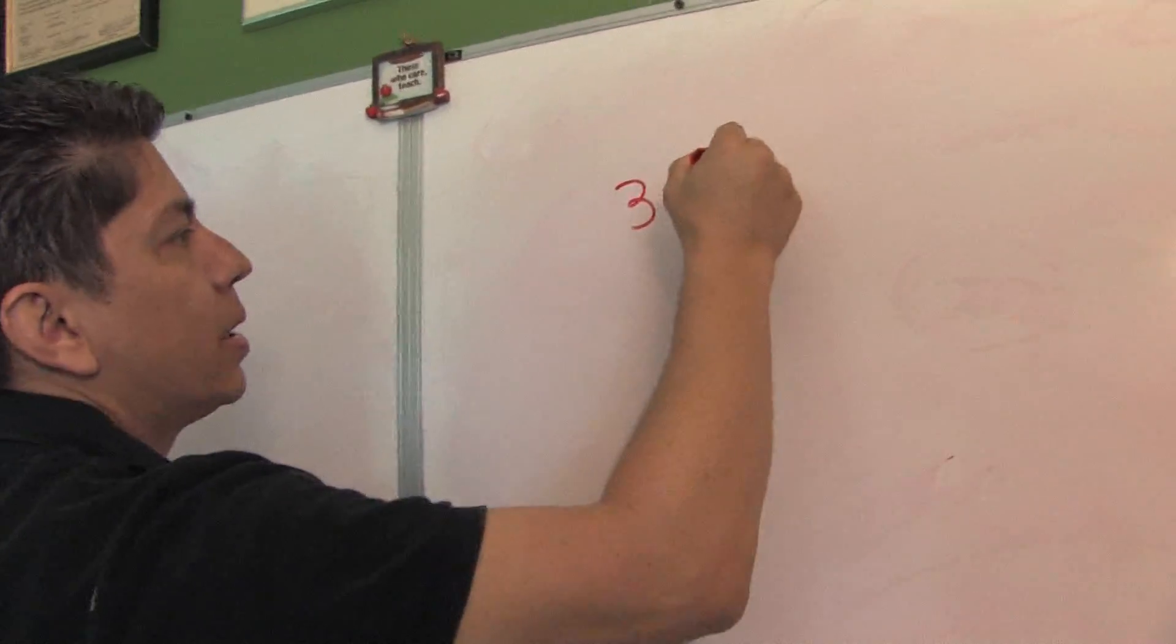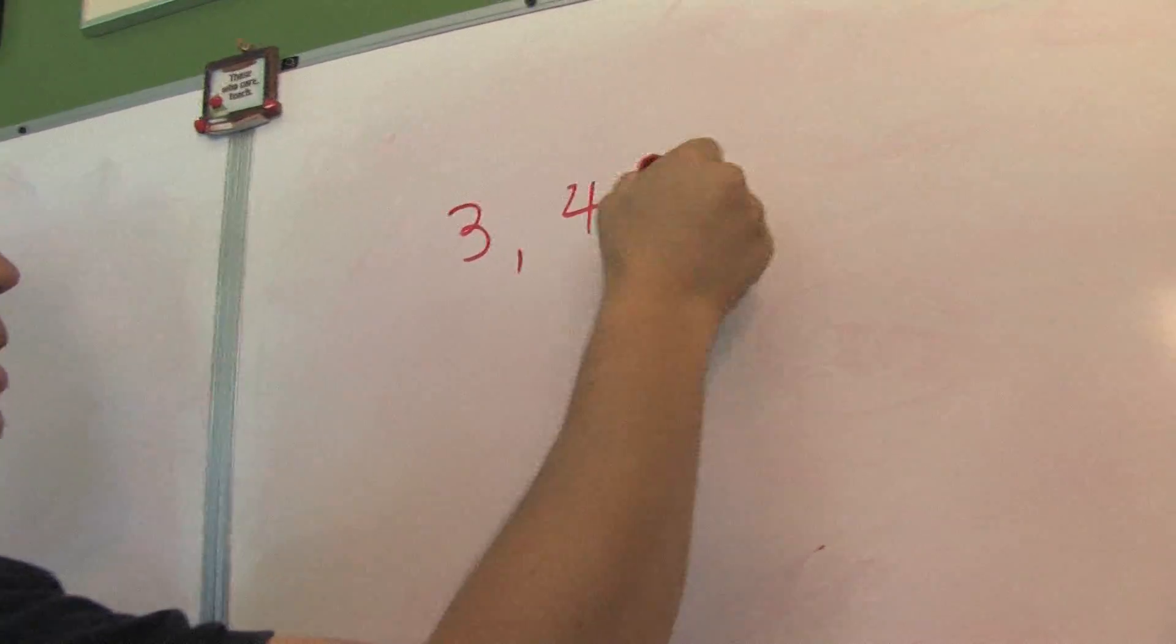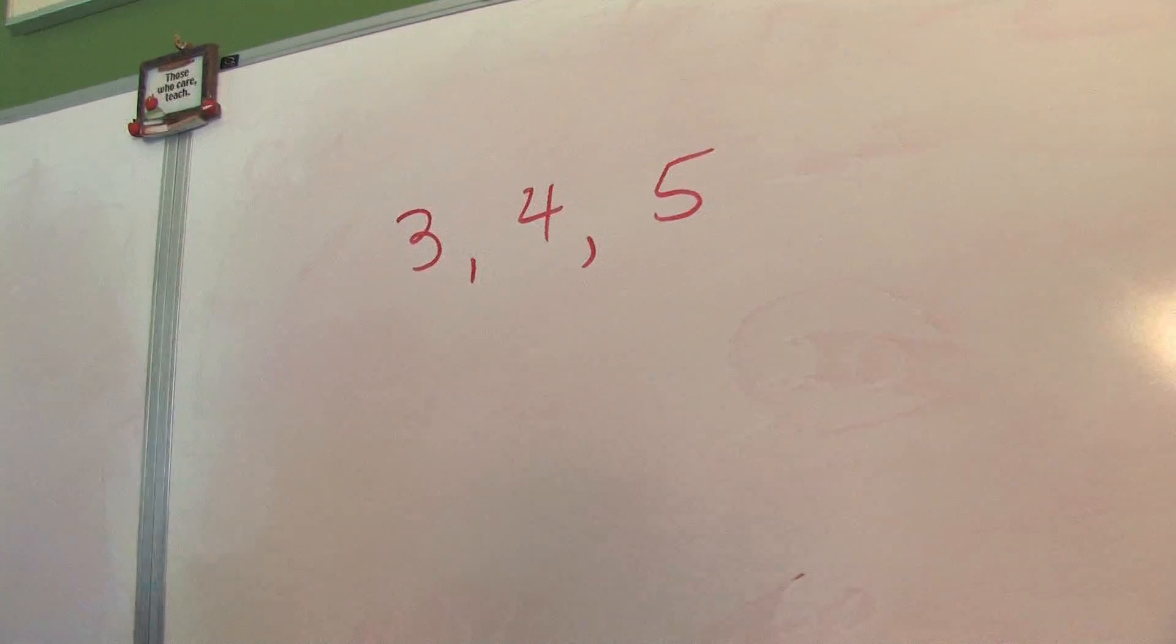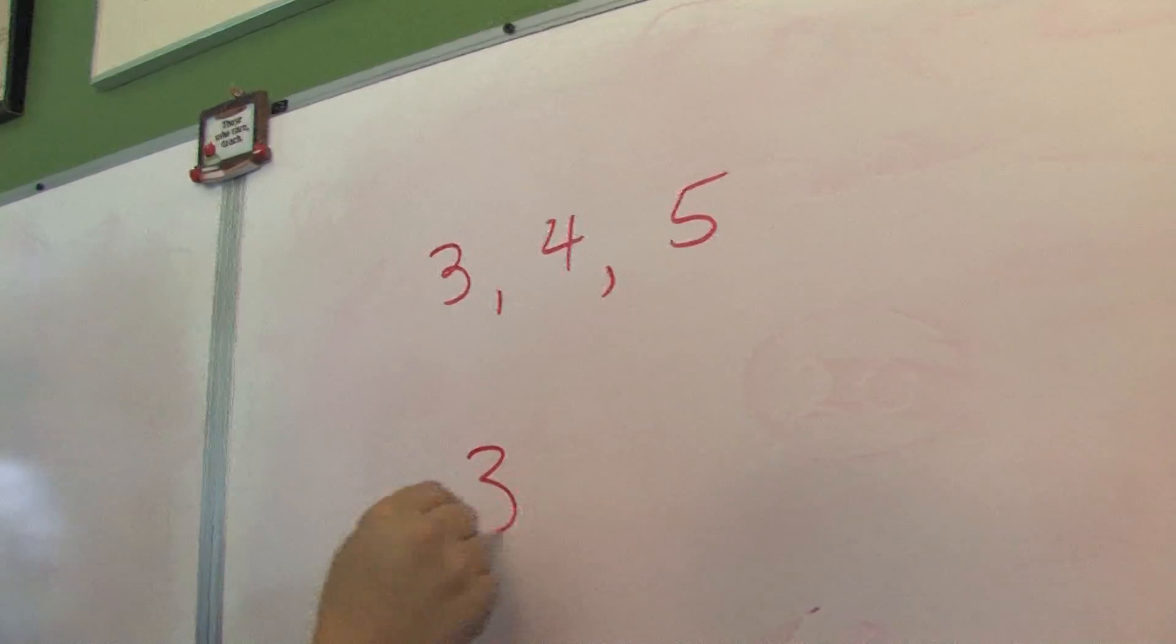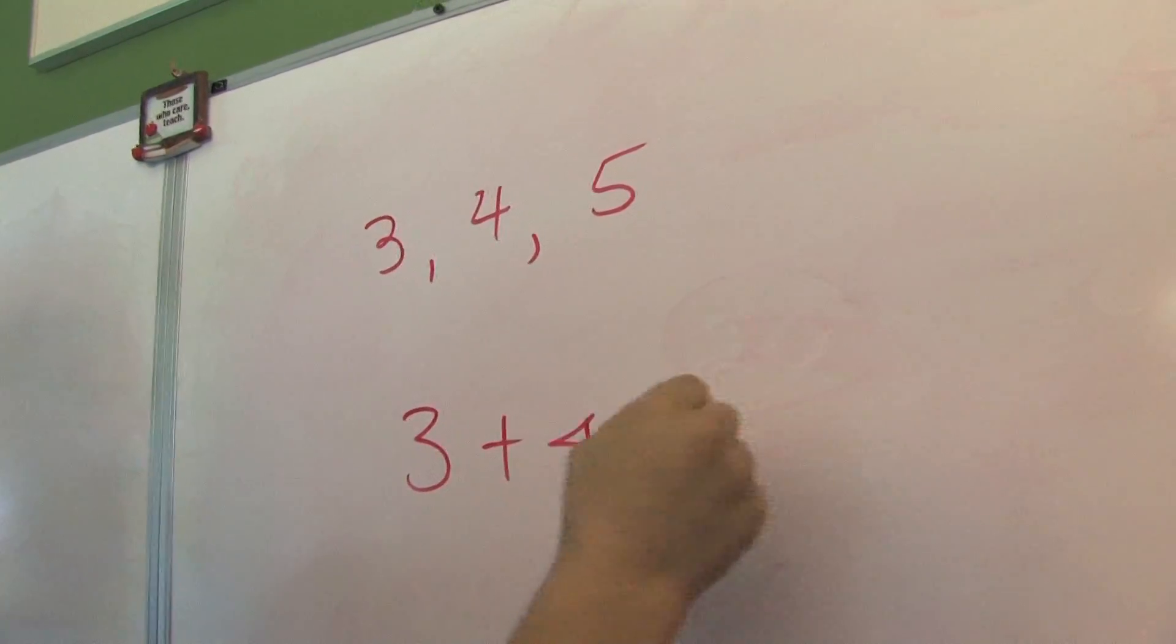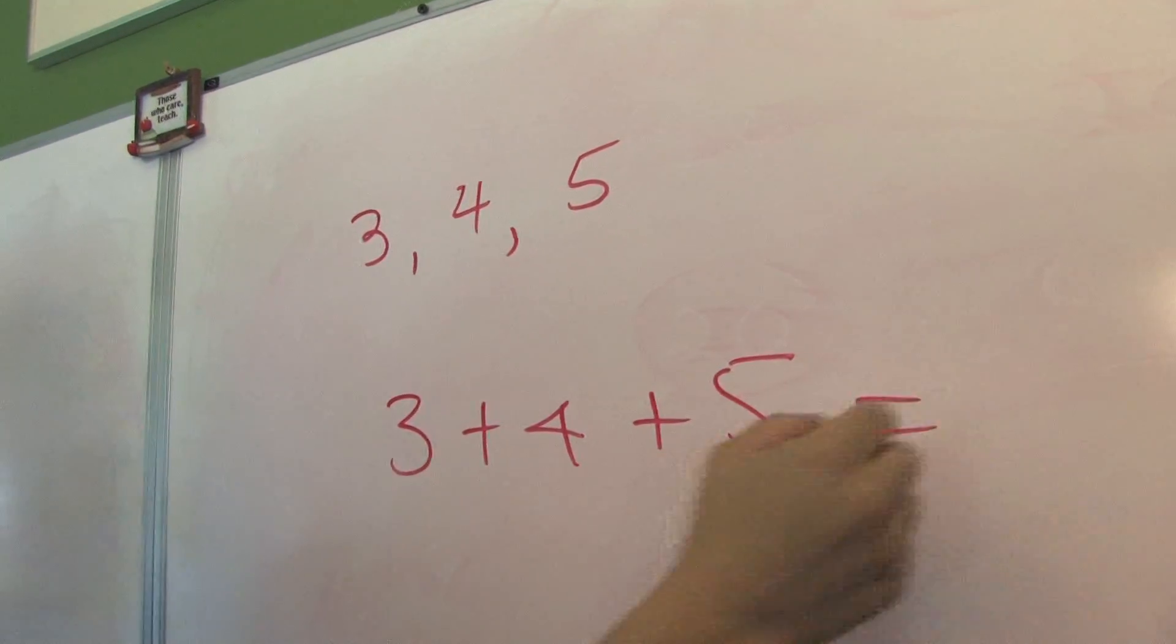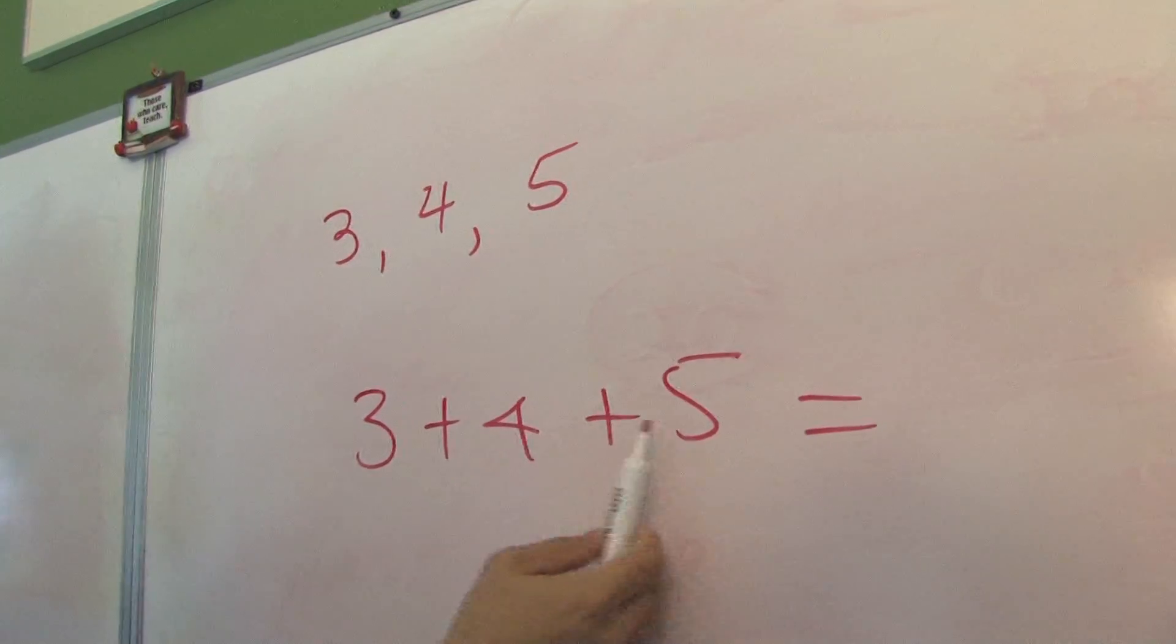Let's say you have the numbers 3, 4 and 5. So to get the average of these numbers, you add the numbers 3 plus 4 plus 5, which gives me what? 3 and 4 is 7 and 5 is 12.